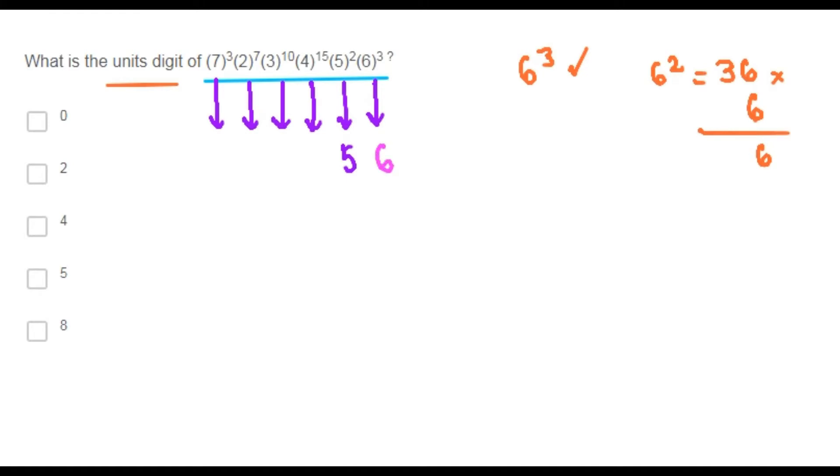Now, 5 times 6 is 30. The unit's digit is 0.